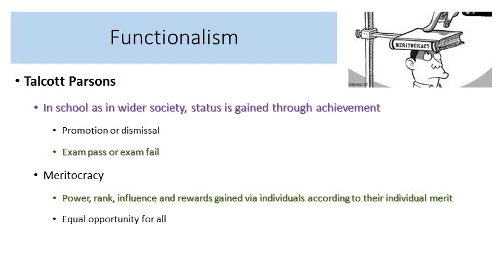It's very important, however, if you want to have a meritocracy, that there must be equal opportunities for all. Everyone — irrelevant of their background, ethnicity, gender and so on — must have an equal opportunity to show what they're capable of so that rewards can be handed out fairly. If we don't have those equal opportunities, we don't have meritocracy. Parsons also said that increasingly in modern society, there is less focus on ascribed statuses — the status you are born with — and rather the focus now is on achieved statuses, gained through your own hard work, intelligence and efforts.